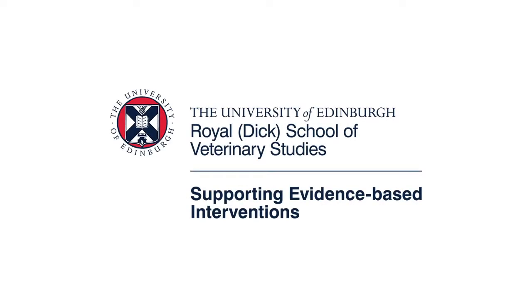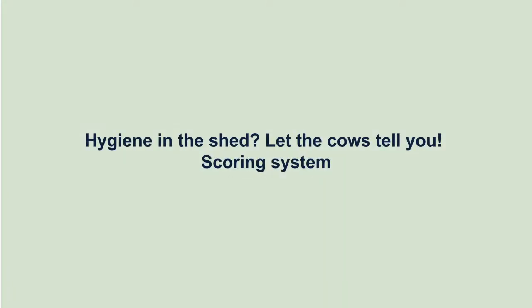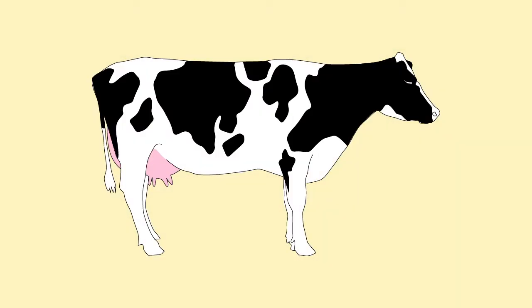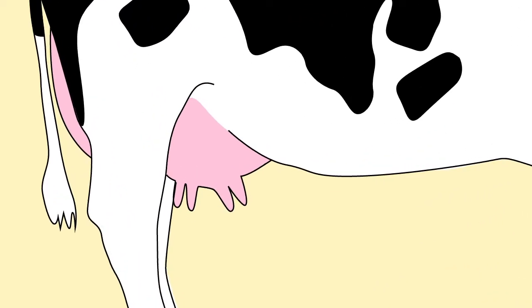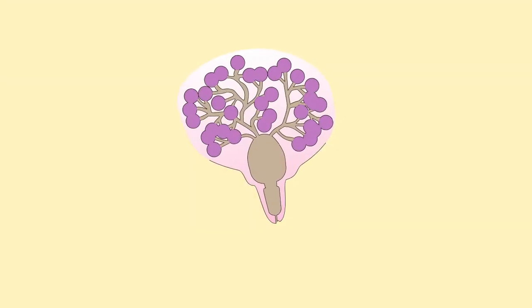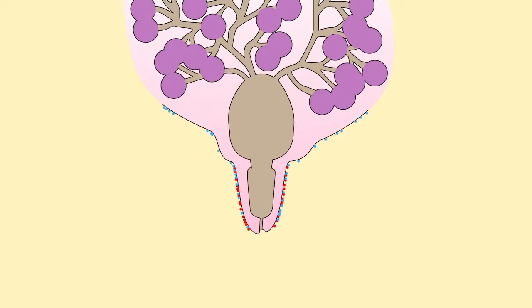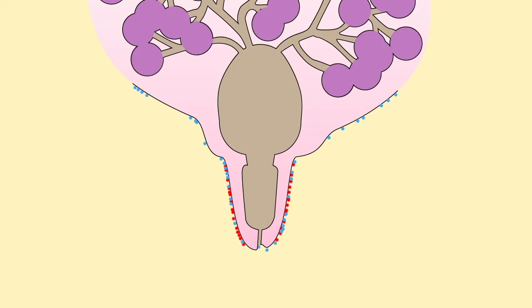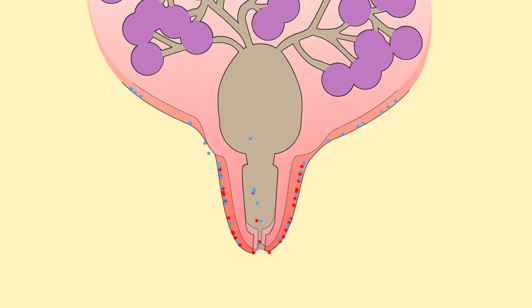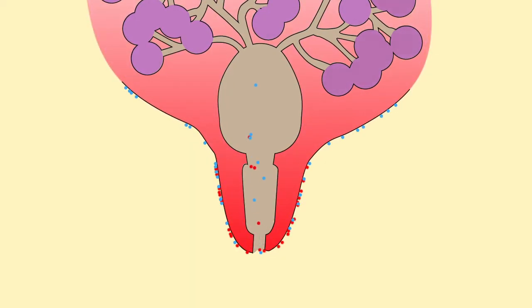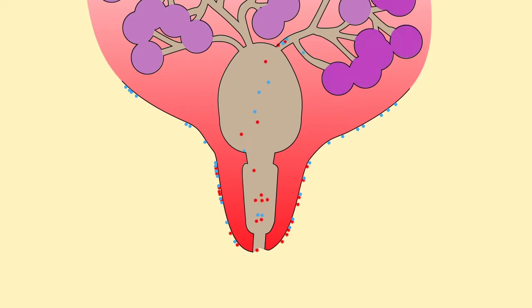Welcome to this series on mastitis in dairy cows, brought to you by the University of Edinburgh. This video is about hygiene in the shed: let the cows tell you. Mastitis is the infection of the milk-producing gland. Bacteria invade the teat end via the teat canal and cause an infection.